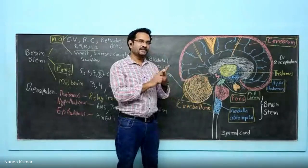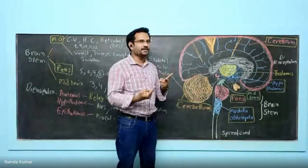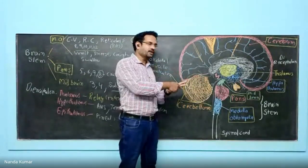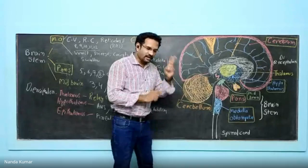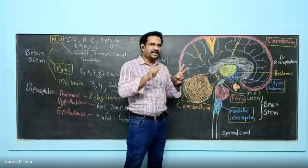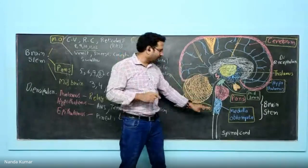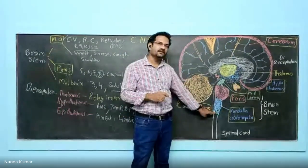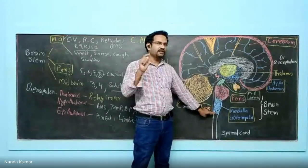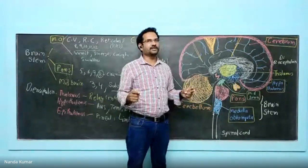Similarly, the respiratory center controls increase in respiration and reducing respiration. Cranial nerves 8, 9, 10, 11, and 12 come from this region. We have 12 pairs of cranial nerves in total, and five of those pairs originate from the medulla oblongata.